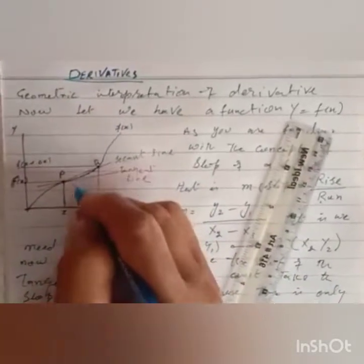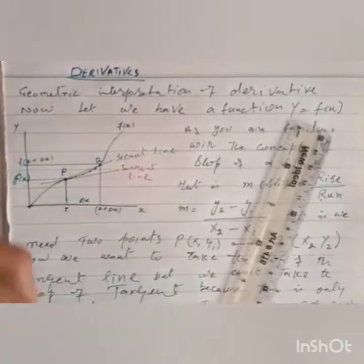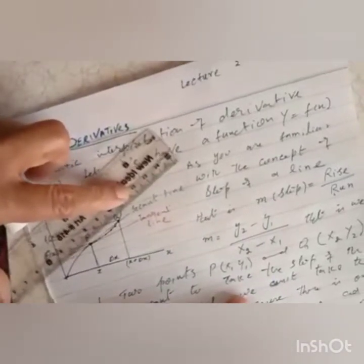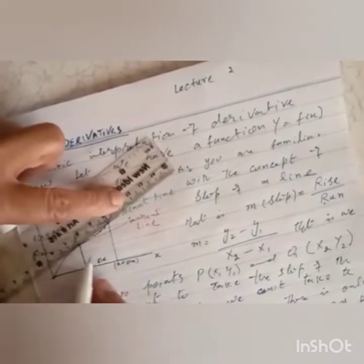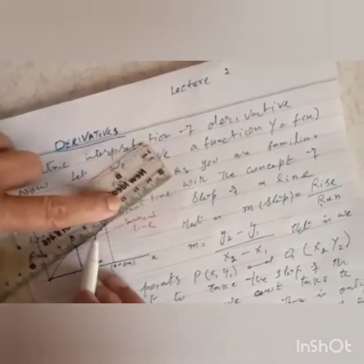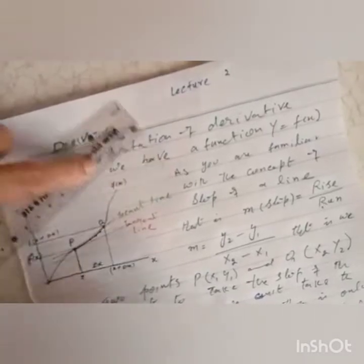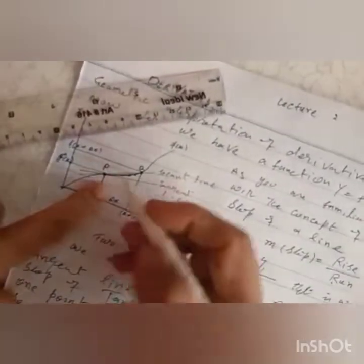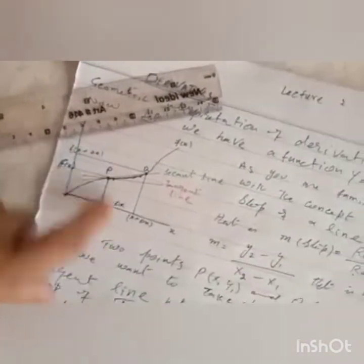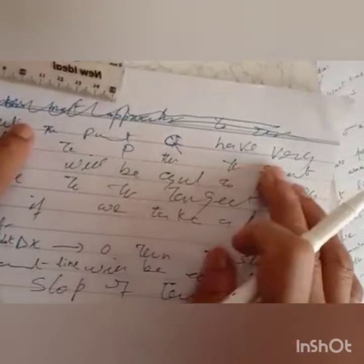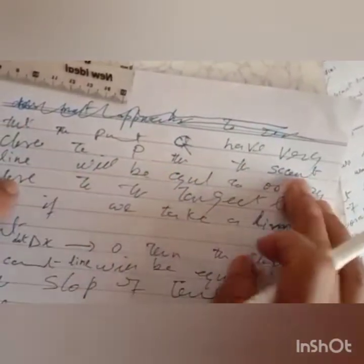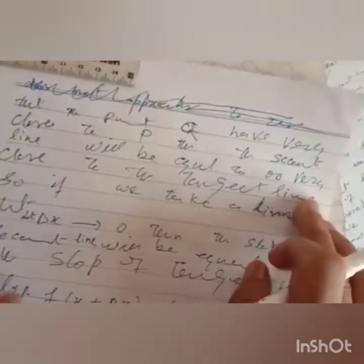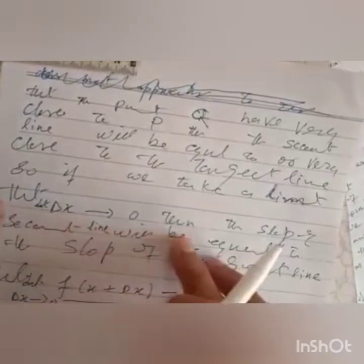As point Q gets closer and closer to point P, the secant line becomes closer and closer to the tangent line. When delta x approaches zero (but is not equal to zero), point Q becomes very close to point P, and the secant line becomes very close to the tangent line.